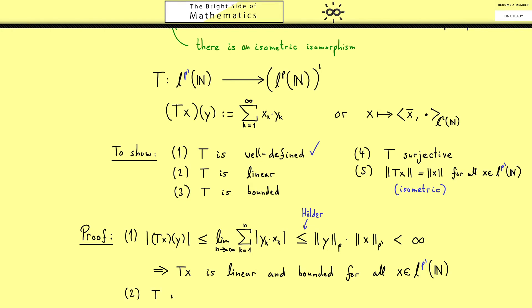The next step is then that T is a linear map. This is so simple that I don't have to write down anything. I just say you know the properties of the inner product. So let's take the linearity and go to the boundedness.